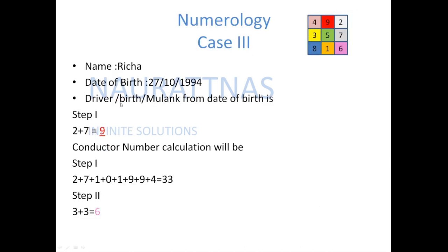Now we will study case 3, which is of Richa. Richa is born on 27th of October 1994. We will calculate Richa's driver number, that is her birth or Mulank number. Step 1: we calculate 2 plus 7, that is 9. So the driver number of Richa is 9. Now we will calculate the conductor number of Richa by adding her whole date of birth: 2 plus 7 plus 1 plus 0 plus 1 plus 9 plus 9 plus 4.